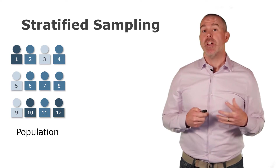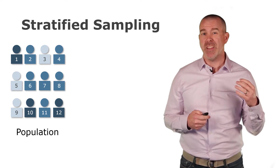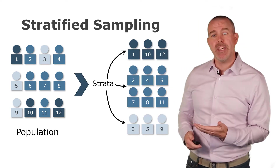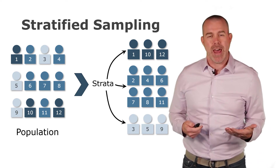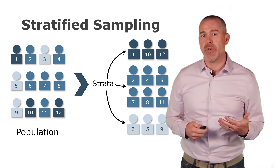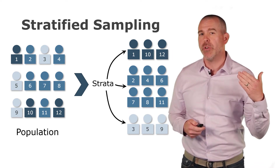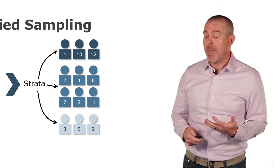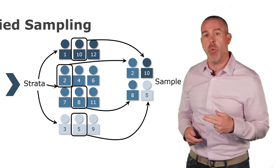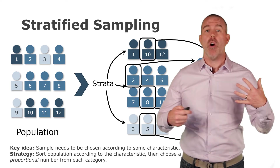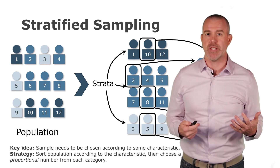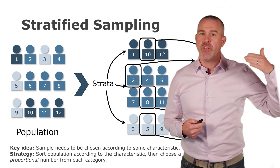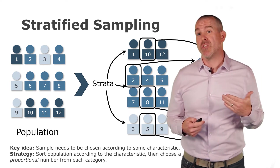Next we have stratified sampling. This is used when there's some characteristic about the population that you're specifically interested in getting a representative sample for across each subgroup. Your population is naturally categorized into different strata, each of different sizes, and you select a proportional number from each stratum. Here with a population of 12 and a target sample of four, we pick one from the top, two from the middle, and one from the bottom. The key is knowing the size of each stratum so your sample ratios match the population ratios.